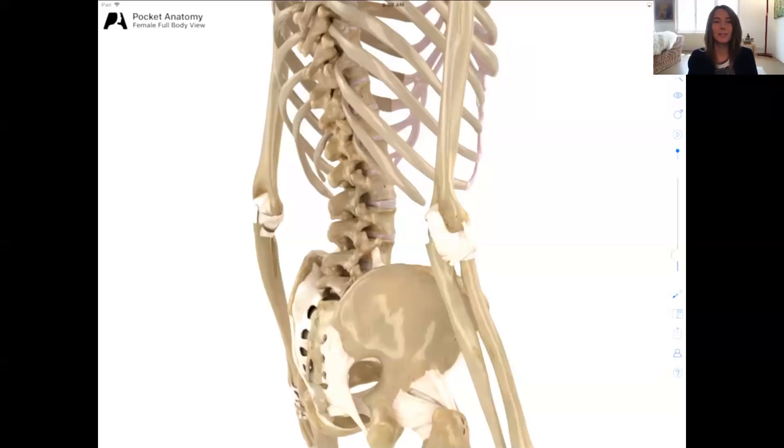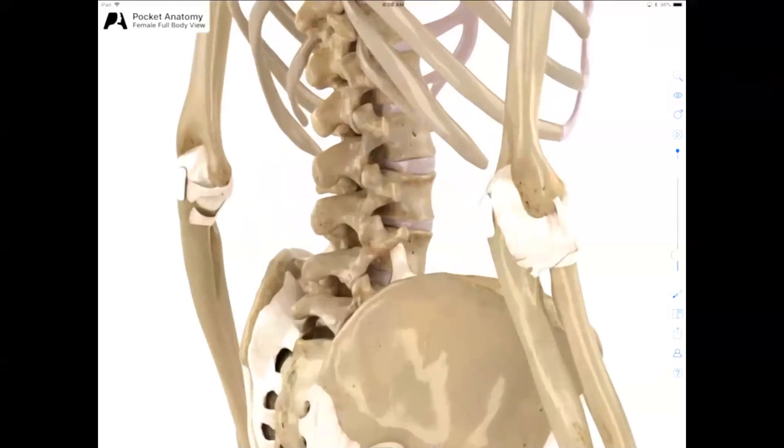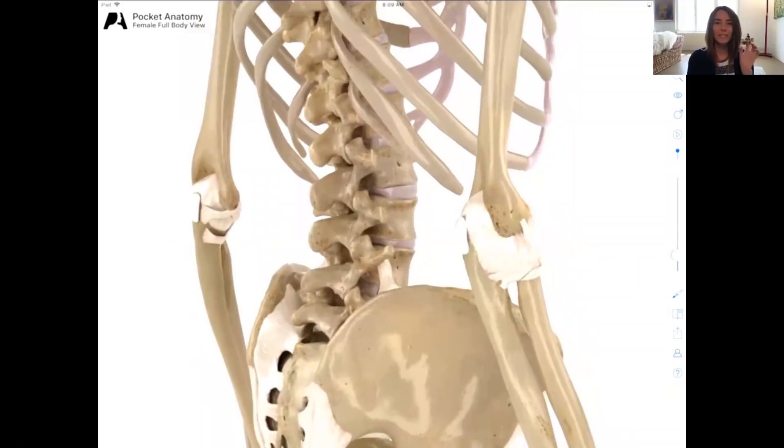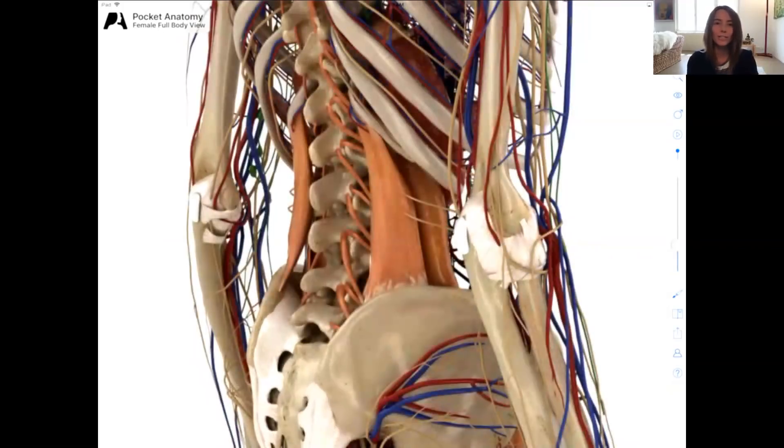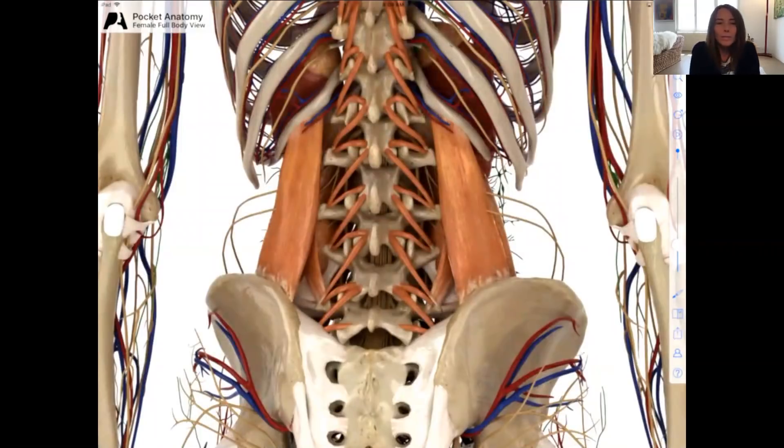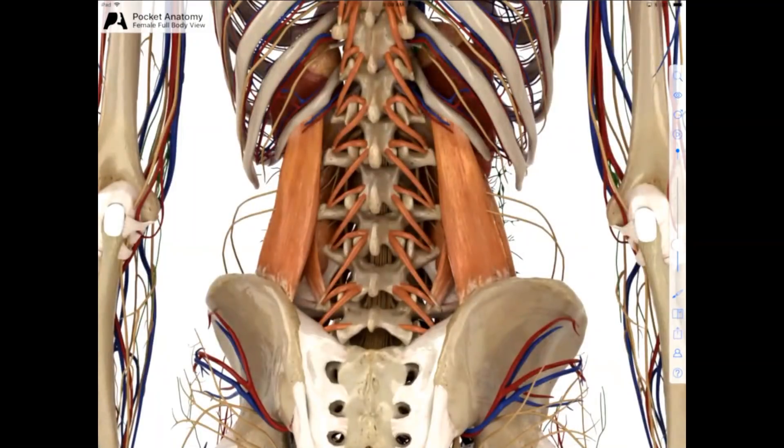So if I pull up Pocket Anatomy, so that we can actually see it. Yeah. This is one of the great things about learning with Mary and with mom and experiential anatomy is we have this visualization tool called Pocket Anatomy, which is an app. And we just can really dive in and see, look at this, it's so great, all the layers of the body. So Mary, what are we talking about? Where is a slip disc happening?